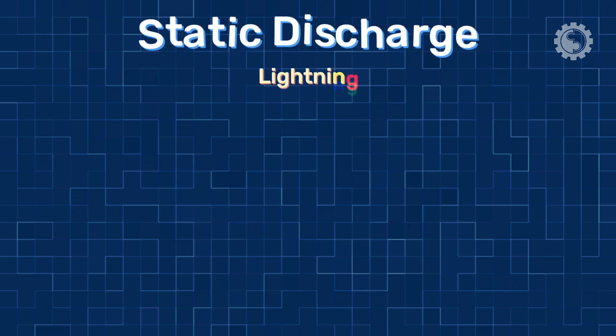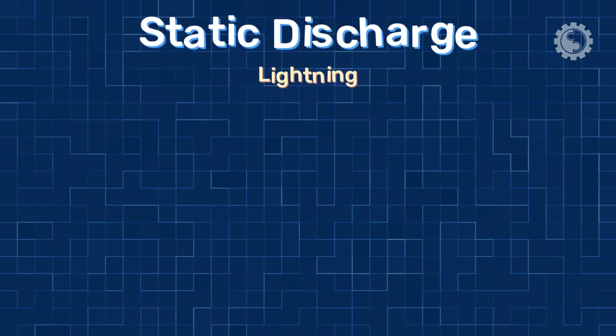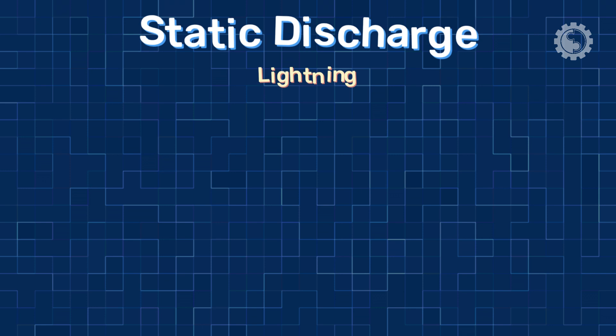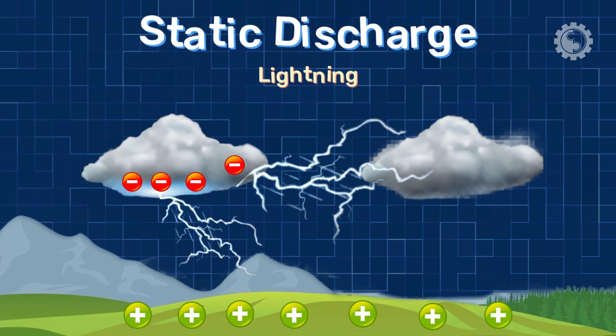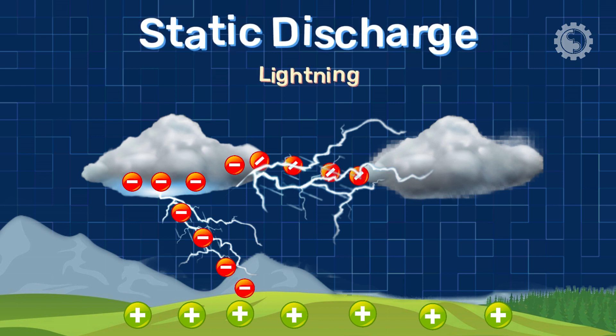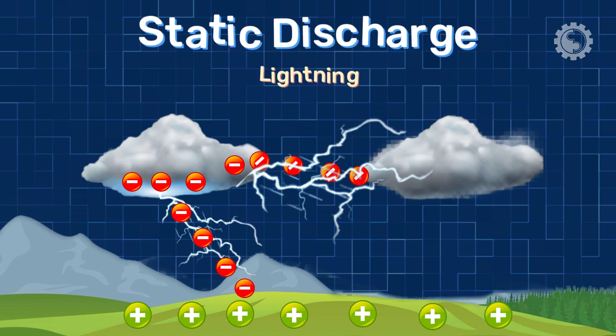For example, lightning. Lightning is a natural example of static discharge. It occurs when there is a buildup of electrical charge in the atmosphere, which is then discharged in the form of a powerful electrical discharge between clouds or between a cloud and the ground.